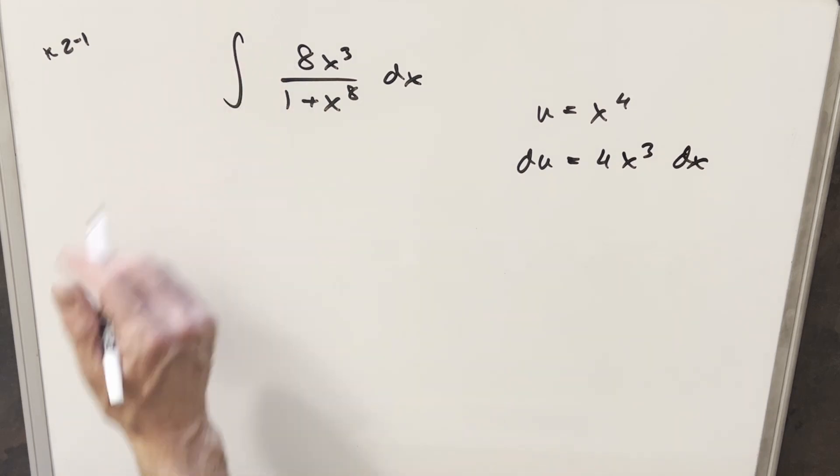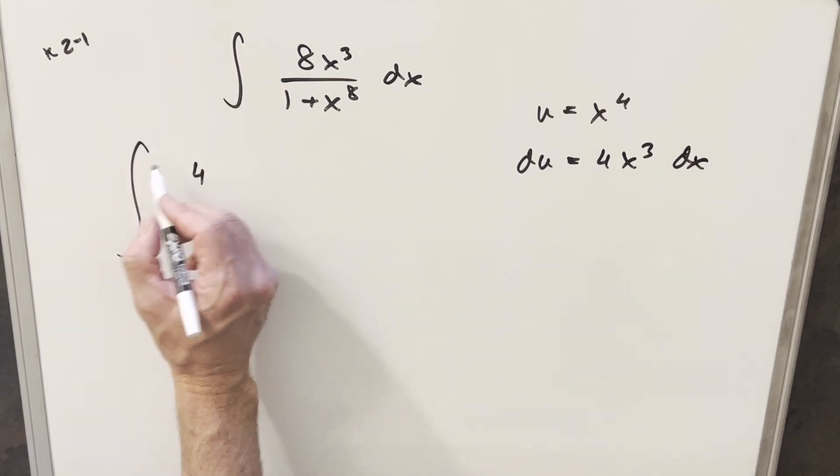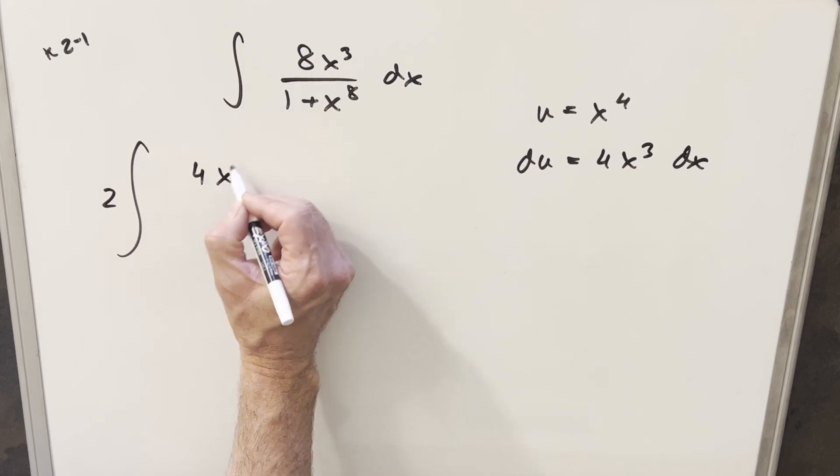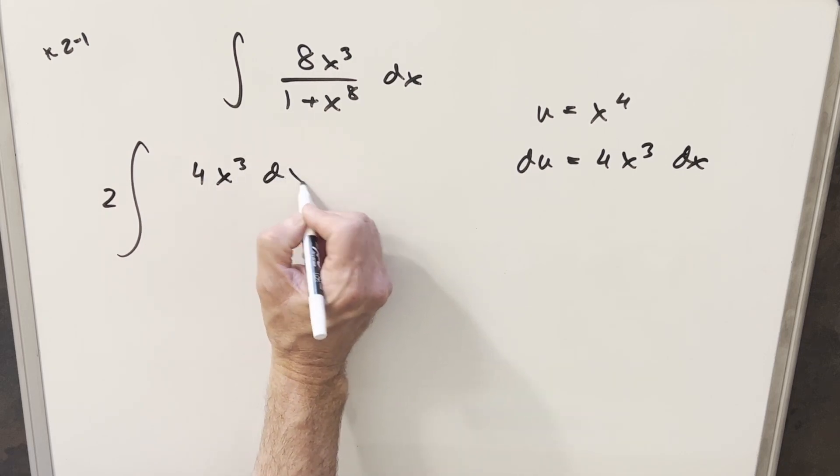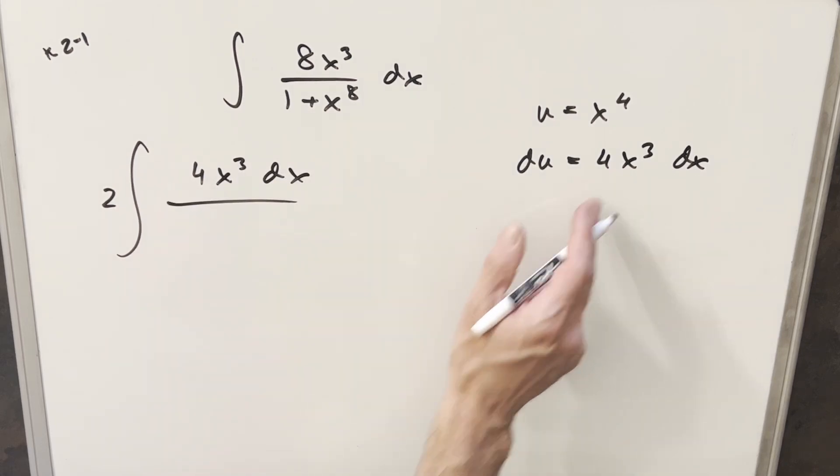Now, of course, we have an 8 in the numerator, but I can just split that up. I can write that as 2 times 4 and take my 2 out front. And so I'll create this 4x cubed dx in the numerator, which is exactly our du.